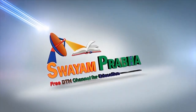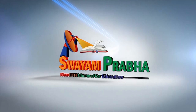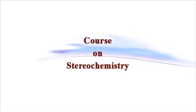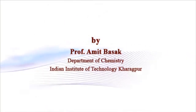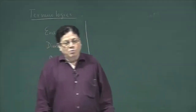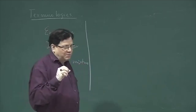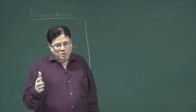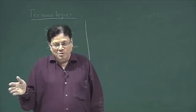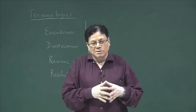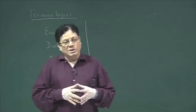Swayam Prabha. Digital India. Educated India. Last time we discussed optical rotation, which is a very important physical parameter for optically active compounds. This is useful not only to identify one compound from another, but also to measure the percentage excess of one enantiomer over the other. We introduced the concept of enantiomeric excess and optical purity.